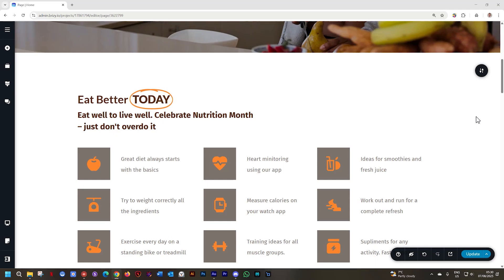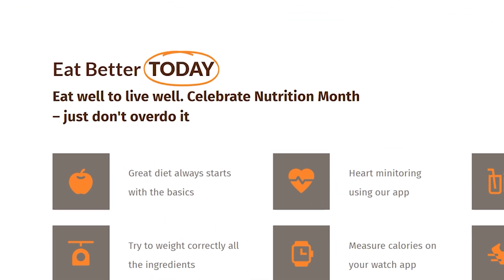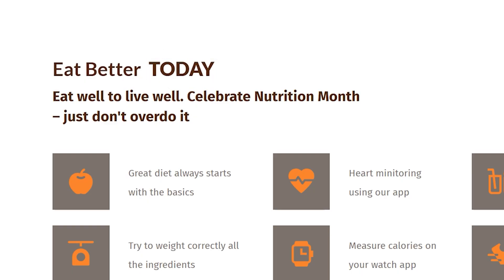The animated heading element within Brizzy, for WordPress and Cloud, allows you to animate certain parts of a heading's text. But there's another feature within that element that allows you to animate a shape that will highlight the text you want highlighted. You can see here I have this one that says Eat Better Today, and around every second it's going to loop and draw that animation.